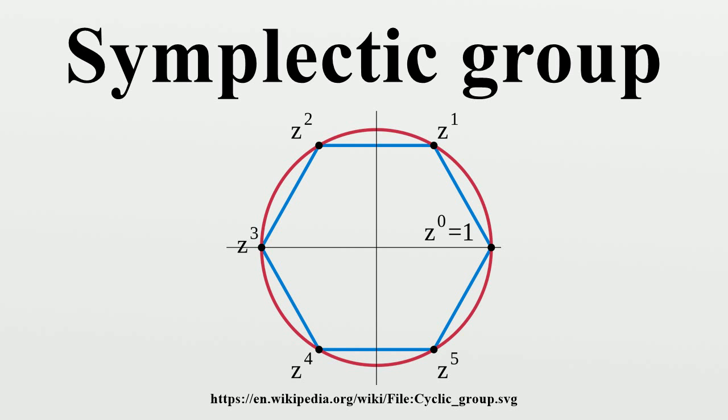For n greater than 1, there are additional conditions, i.e., Sp is then a proper subgroup of SL. Sp(2n,C), the symplectic group over the field of complex numbers, is a non-compact, simply connected, simple Lie group. Sp(2n,C) is the complexification of the real group Sp(2n,R).